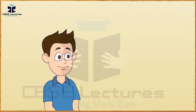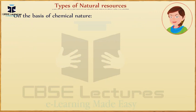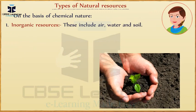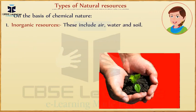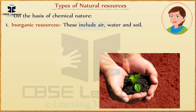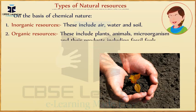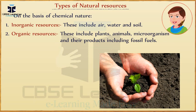What are the types of natural resources? On the basis of chemical nature: First, inorganic resources — these include air, water and soil. Second, organic resources — these include plants, animals, microorganisms and their products including fossil fuels.